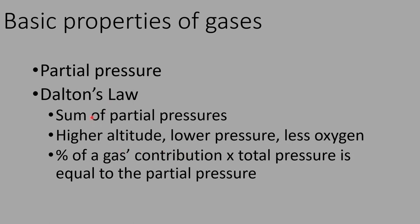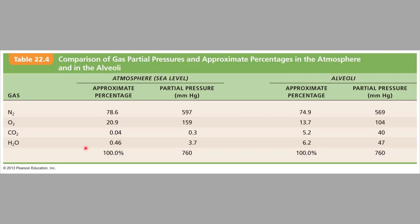So Dalton's Law covers those three things. You are not expected to remember the specific percentage or partial pressure of each gas. What you do need to know: 760 mmHg is atmospheric pressure at sea level. You also need to know the order — there is more nitrogen than anything else in our atmosphere, followed by oxygen, followed by water vapor, followed by CO2. You do not need to know specific numbers except 760 mmHg.